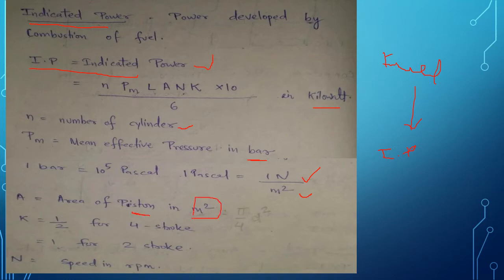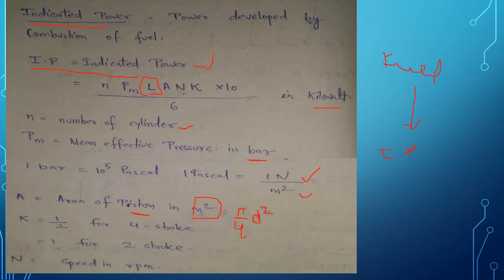The area of the piston cylinder is given by the formula π/4 × d², where d is the bore diameter. k is half for four-stroke engines and one for two-stroke engines. l is the stroke length, and capital N is the speed in RPM. This completes the indicated power formula.